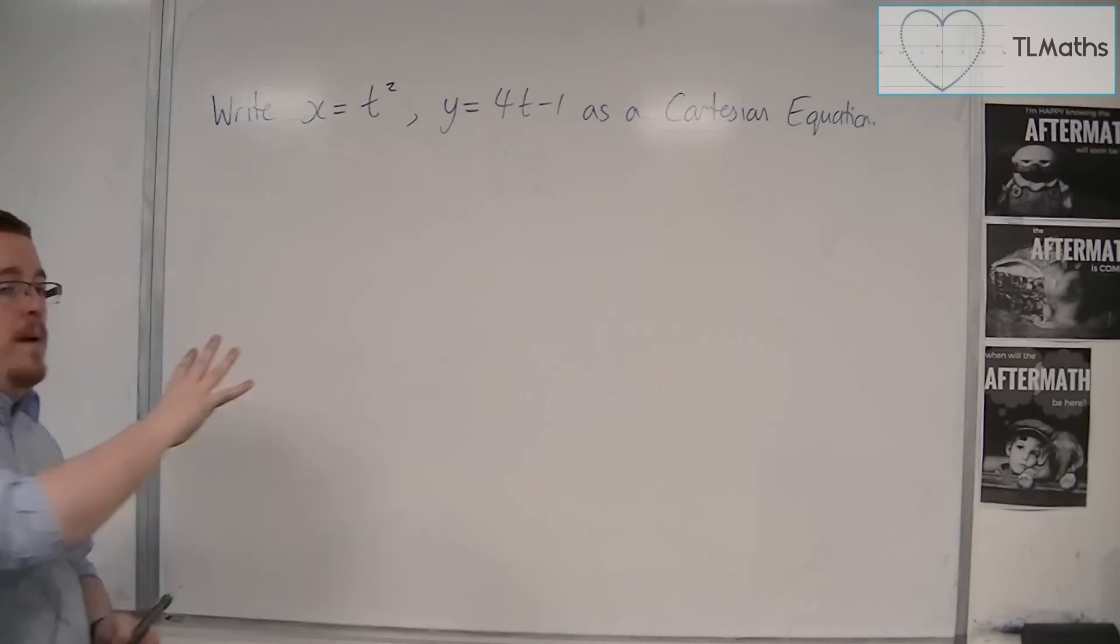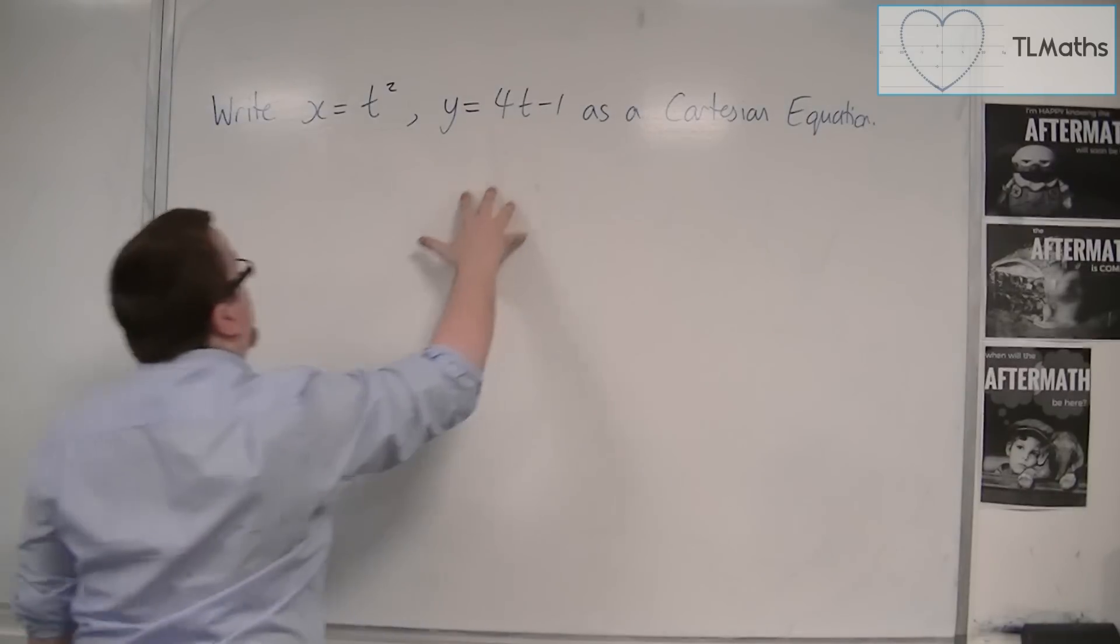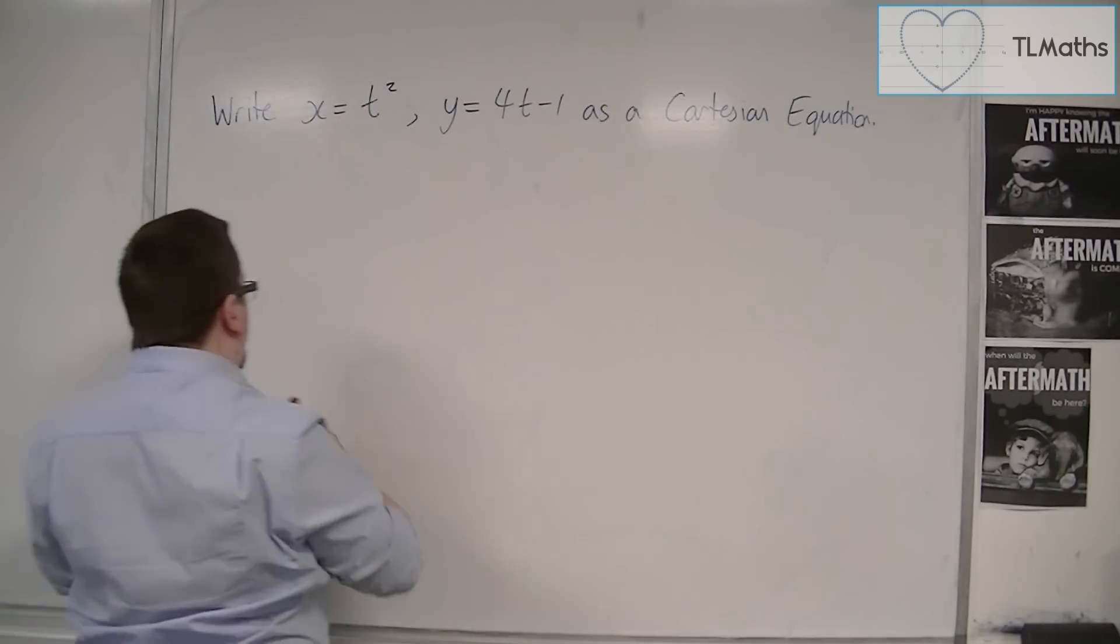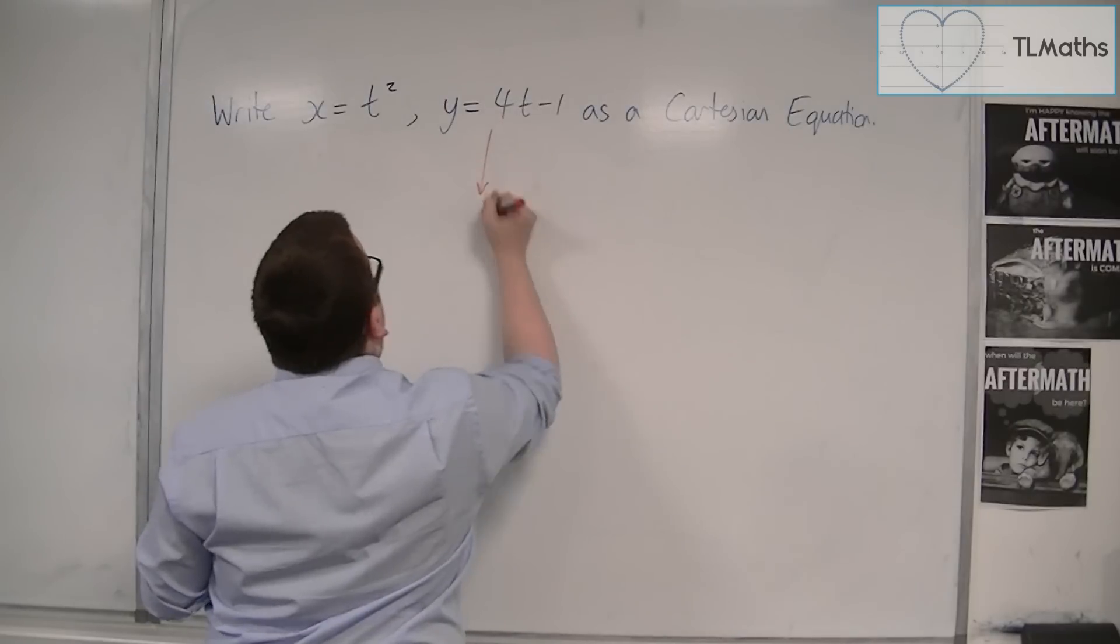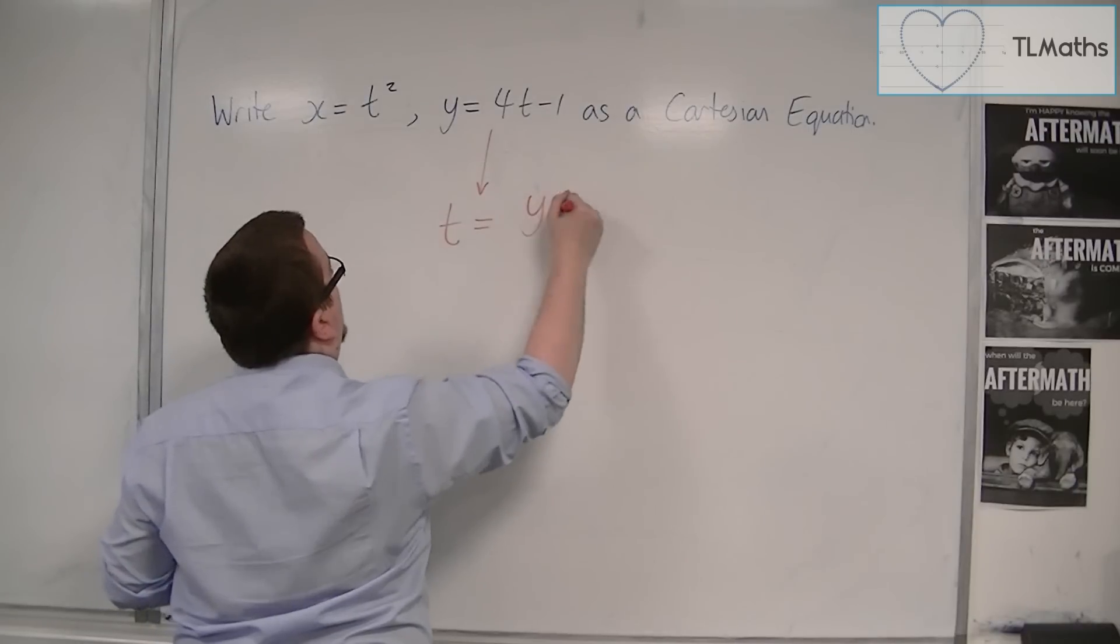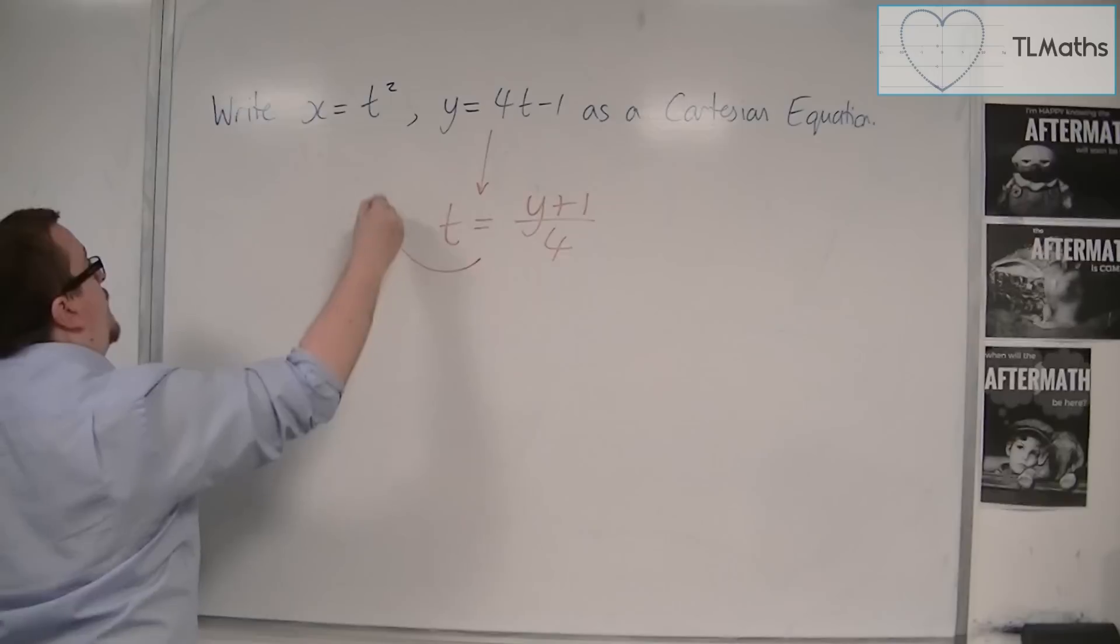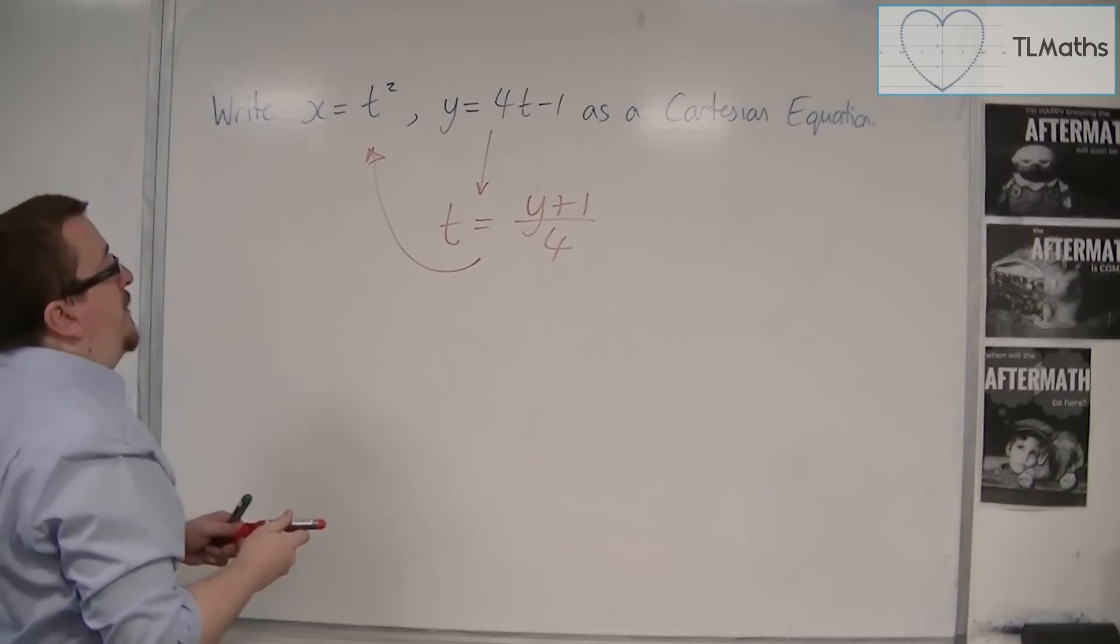It is going to be much better, a much better idea to go from this equation and substitute into this one. So I'm going to rearrange this to get t equals y plus 1 over 4. And then I'm going to substitute this into the first equation.